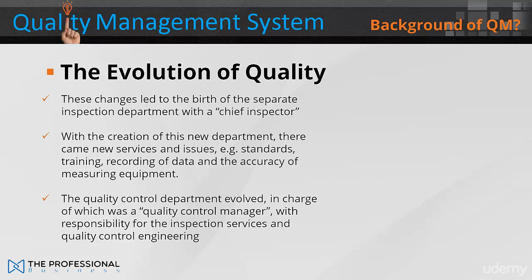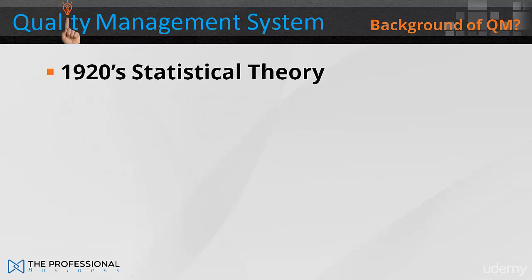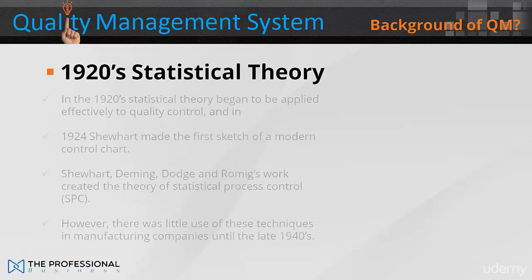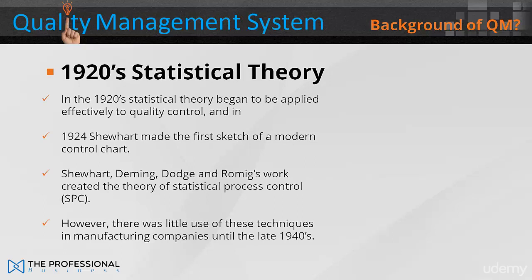It became clear that the responsibility of the chief inspector was more than just production acceptance, and the need to address defect prevention emerged. In the 1920s, statistical theory began to be applied effectively to quality control, and in 1924, Shewhart made his first sketch of a modern control chart.